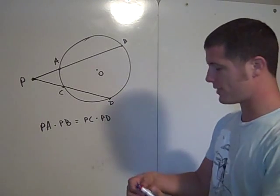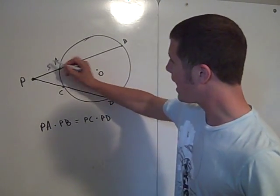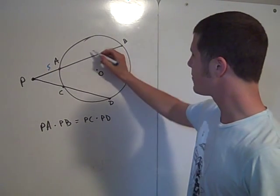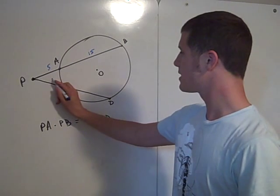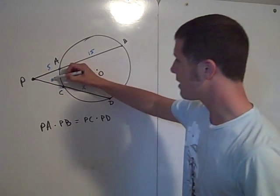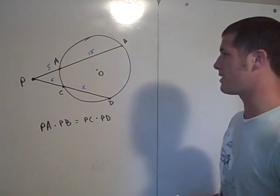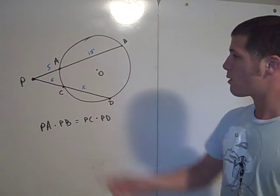So, for instance, if this is 5, and this is 15, and this is 6, and this is X, and we have a question that asks us to solve for X. Well, we can do that using the power of the point theorem.